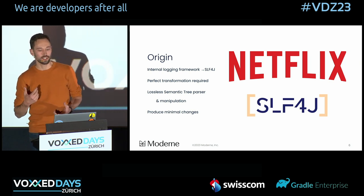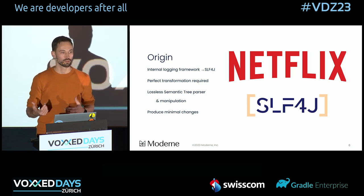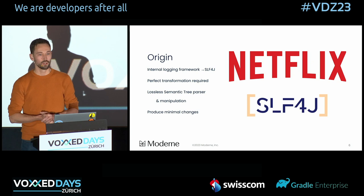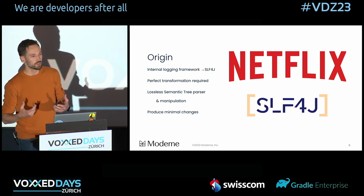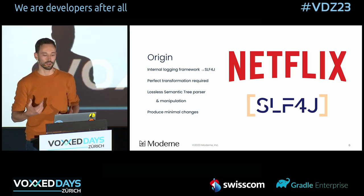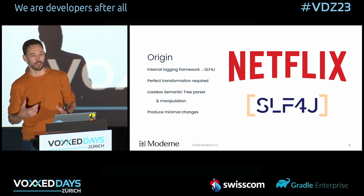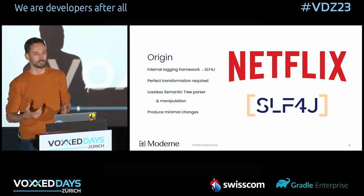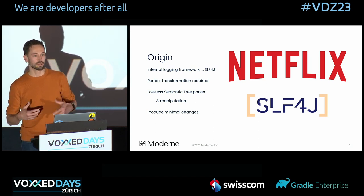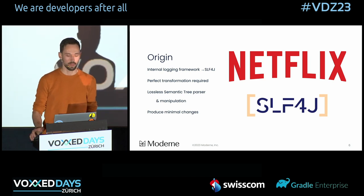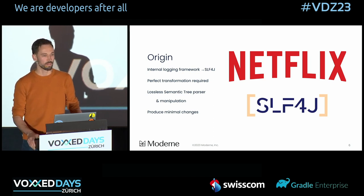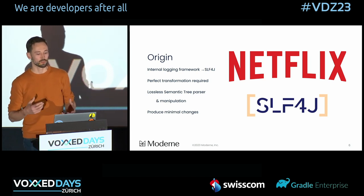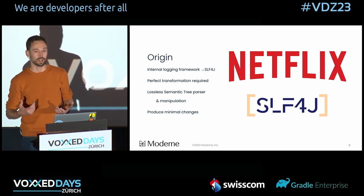Open Rewrite was started at Netflix, initially to aid in the migration of an internal logging framework to SLF4J. You can probably imagine that any logging framework is going to be pervasive throughout an organization. To even consider migrating, you'd need perfectly accurate automation, especially when usage is spread across hundreds of services. So they developed a parser to accurately read Java and turn source code into a lossless semantic tree. This model can then be modified to replace the old logging statements with calls to SLF4J. The migrated model is written out as close as possible to the original source code, so the applied changes are minimal, leaving surrounding code untouched.